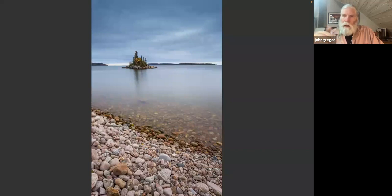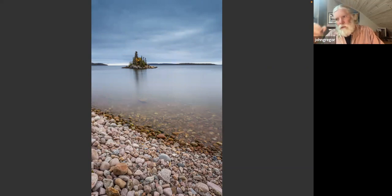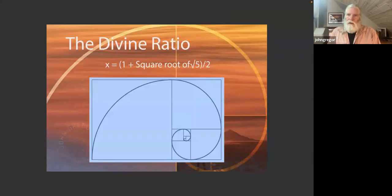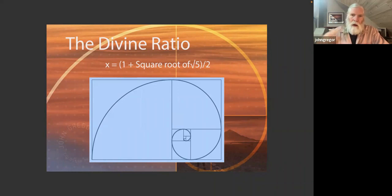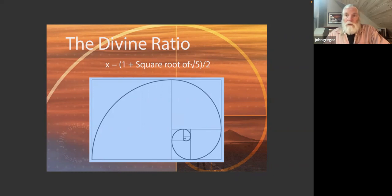One reason the rule of thirds is so emphasized in camera clubs has to do with salons, competitions, and judging — judges reinforce it all the time. This notion has even been taken further into a mathematical algorithm called the divine ratio, which the early Renaissance artists and painters also used for their compositions.